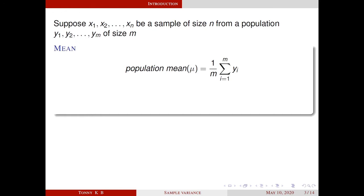For example, suppose we have to find the average life of a bulb mu produced by a company. To calculate this, we have to measure the life of all the bulbs produced by the company, which is almost impossible. So we try to estimate the average life of the bulb mu using a sample. For this, we define sample mean x bar, and using x bar, we try to estimate the population mean mu.